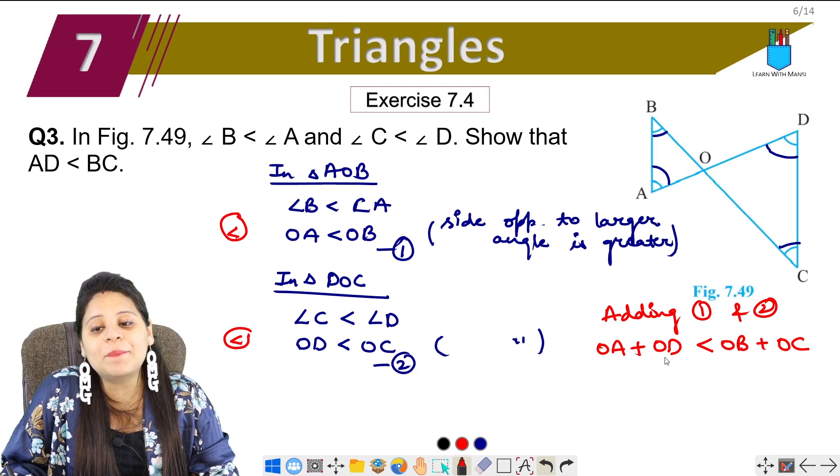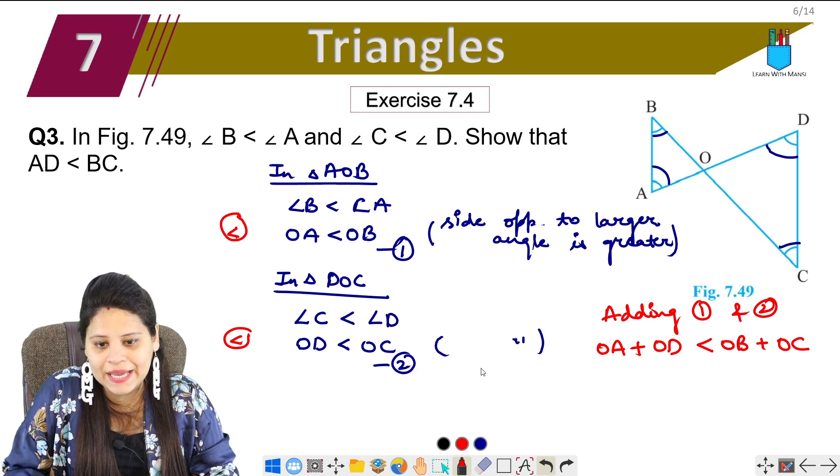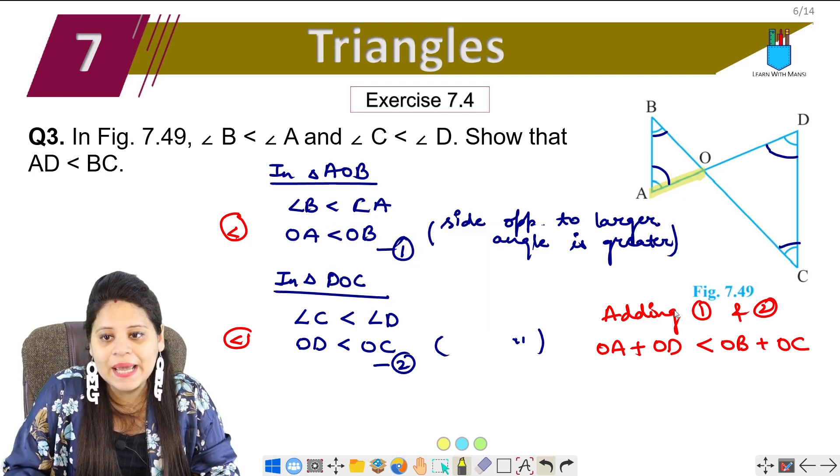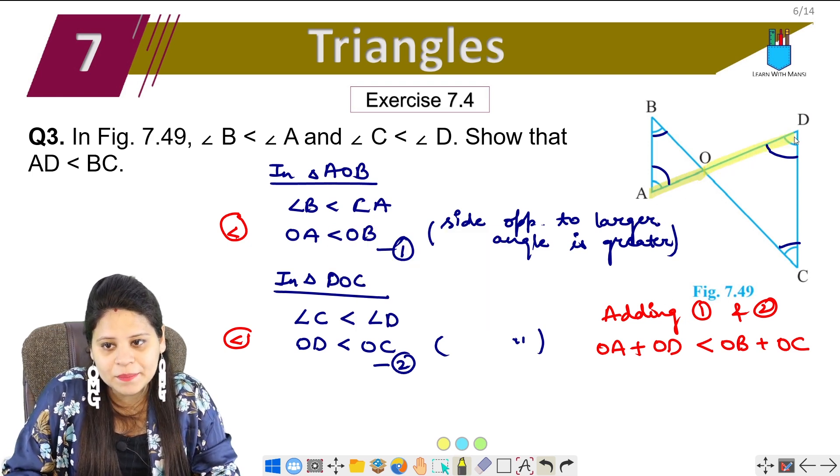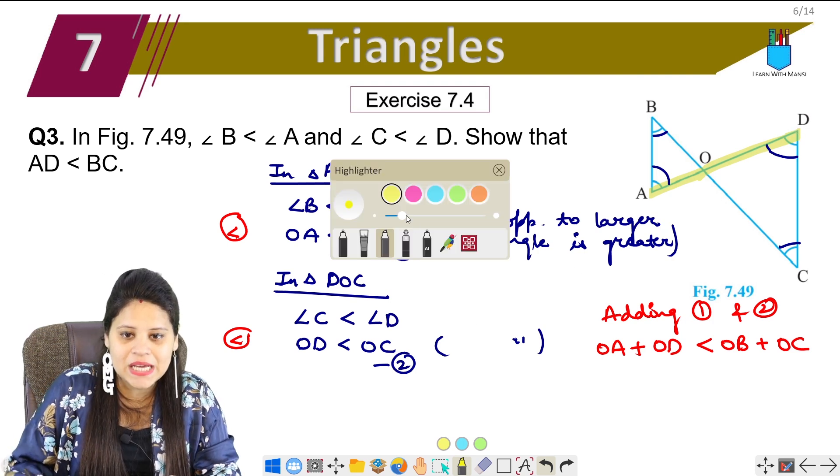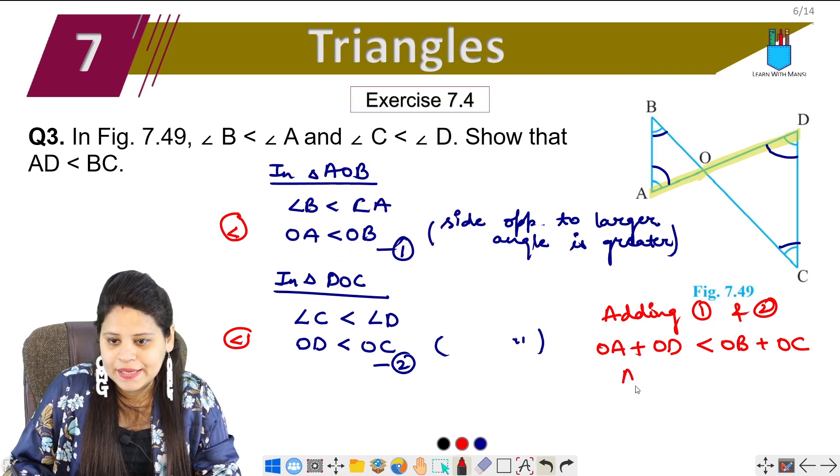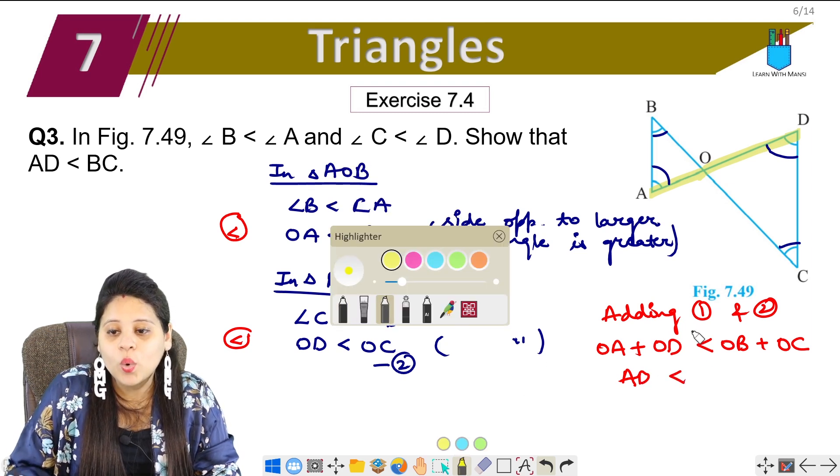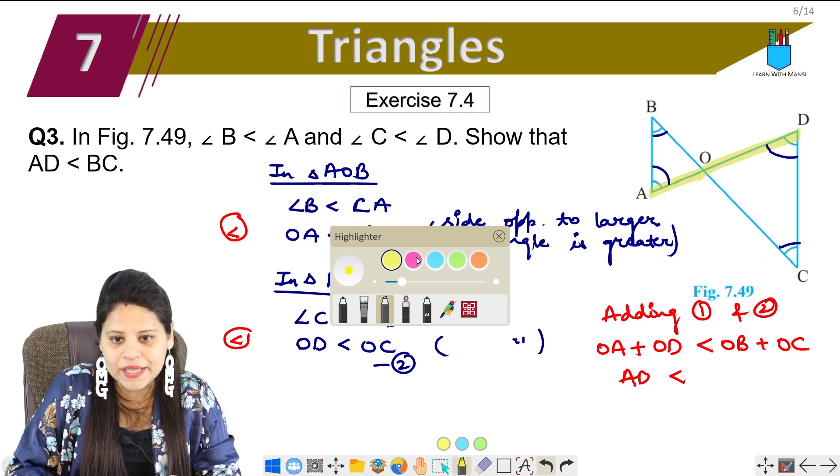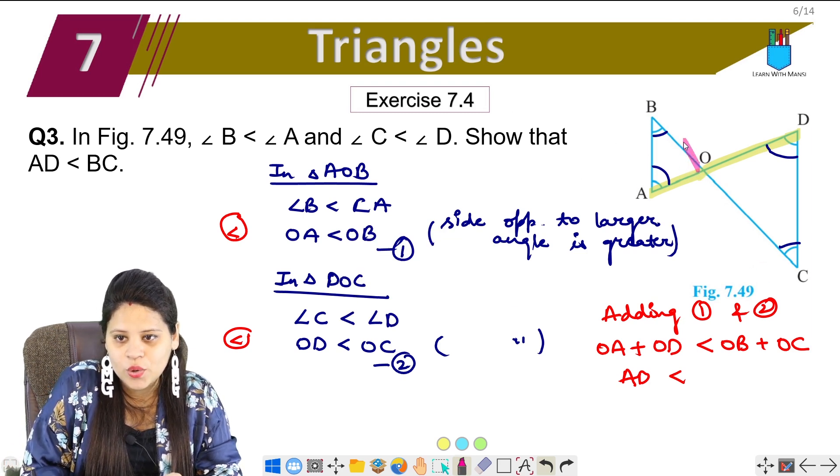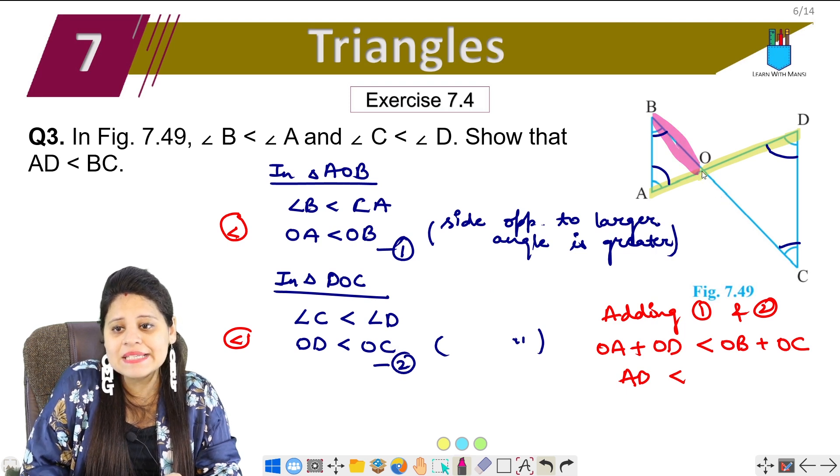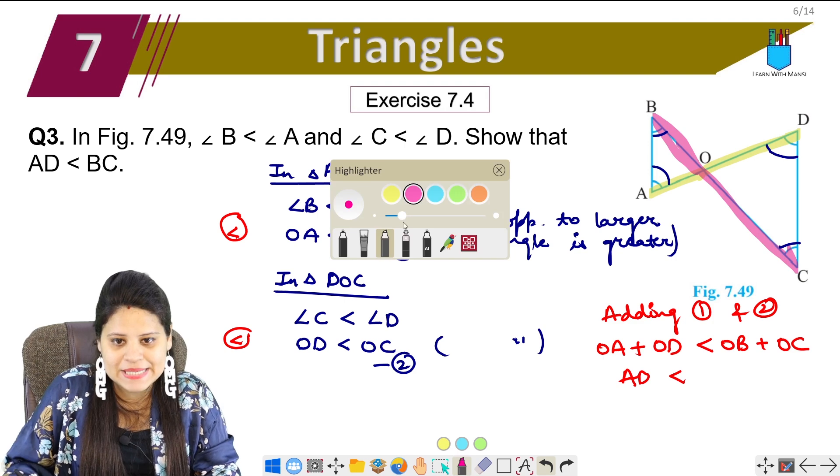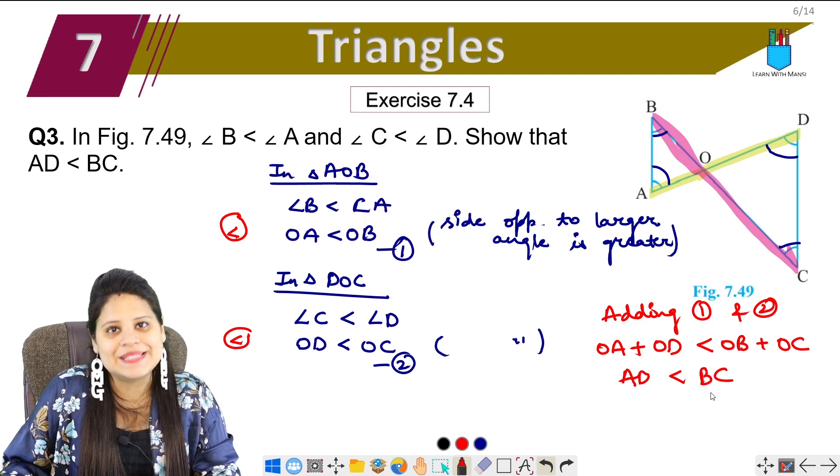So now OA plus OD, A plus OD means this. So what did we get? AD less than will be... Next, what is our next? OB and OC. See, OB, this is OB and with OC. So what did we get? BC. Therefore BC.